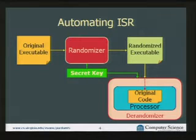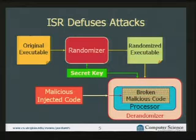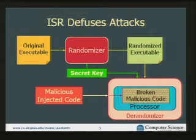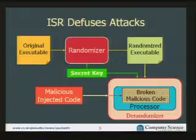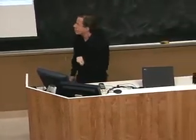For this to work, the derandomizer needs to know the secret key to undo the randomization. What should happen if an attacker finds a way to inject malicious code into a running process is that the only way for the malicious code to reach the processor is through that derandomizer. If the attacker doesn't know the randomization key, that's going to produce effectively random bits. When you run random instructions, they won't do what the attacker wanted — they'll probably just crash the machine. This is still a denial of service, but it doesn't propagate and does no real damage.